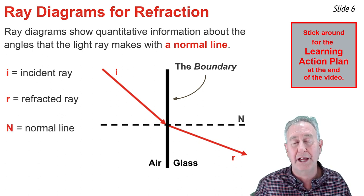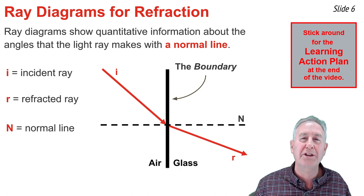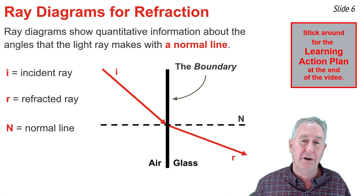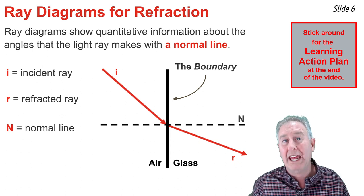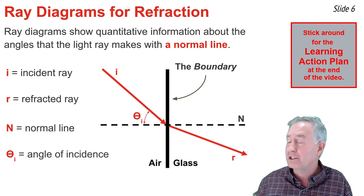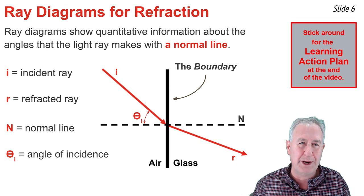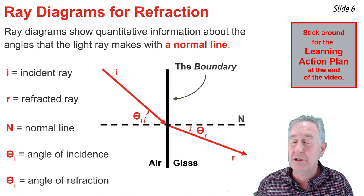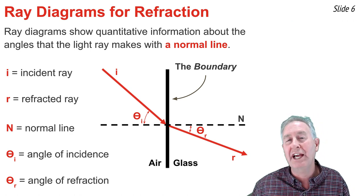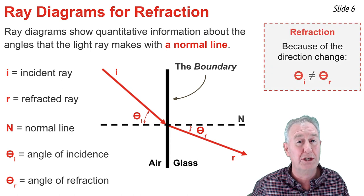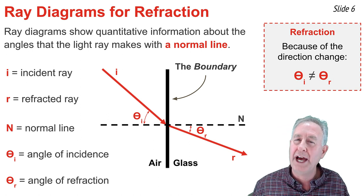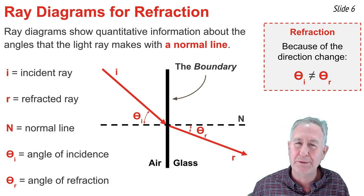This is a so-called normal line, a line drawn perpendicular to the boundary at the point of incidence. Now that we have the normal line drawn, we can identify two angles. The angle of incidence is the angle between the incident ray and the normal line, and the angle of refraction is the angle between the refracted ray and the normal line. Because light is undergoing refraction, that is, because it's changing its direction, this angle of incidence will not be equal to the angle of refraction.